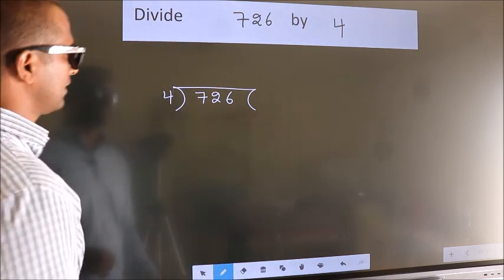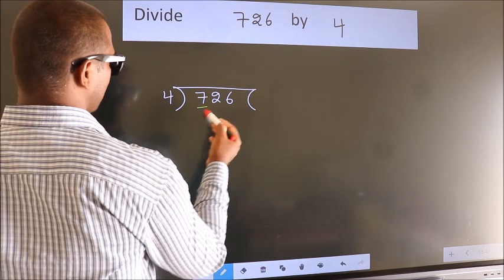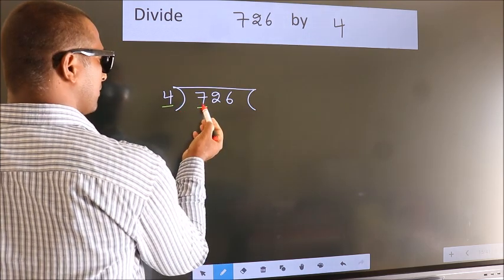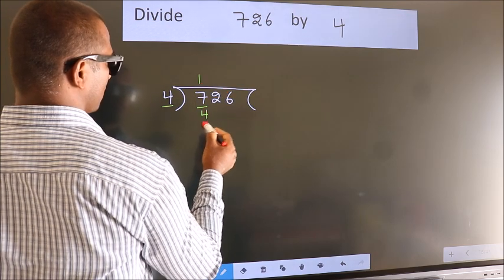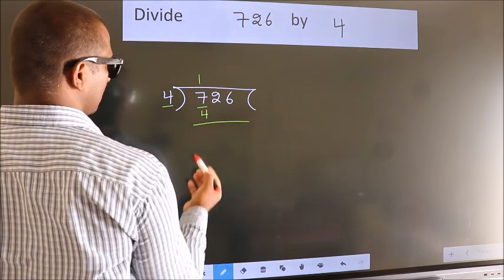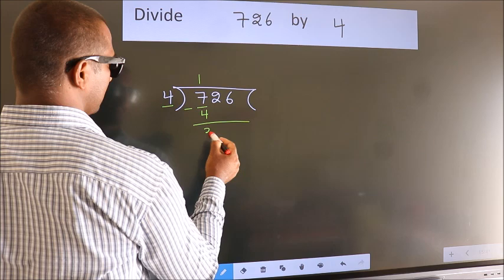Next, here we have 7. Here 4. A number close to 7 in the 4 table is 4 once, 4. Now we should subtract. We get 3.